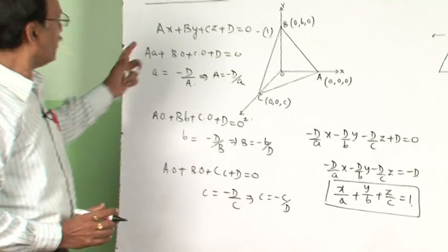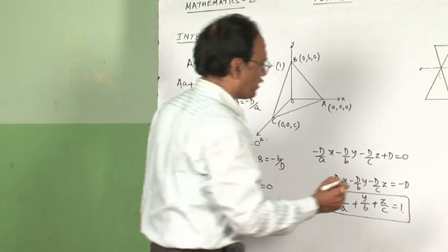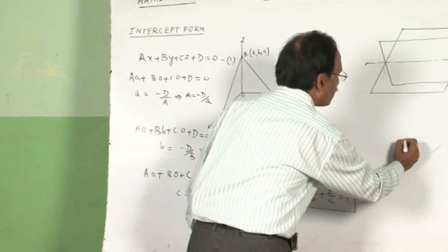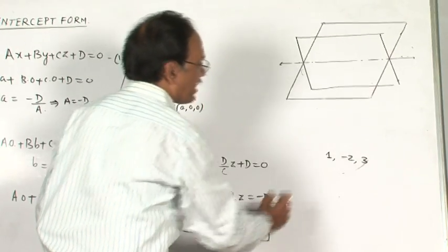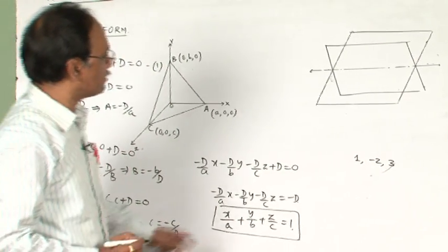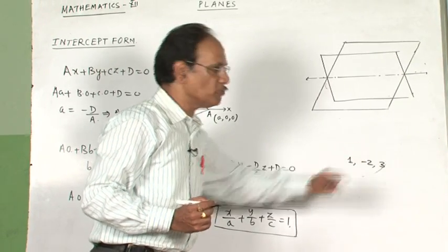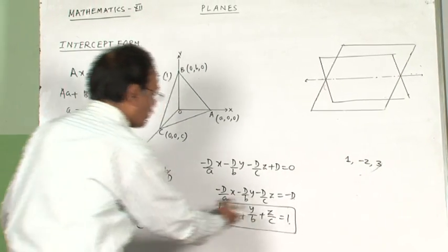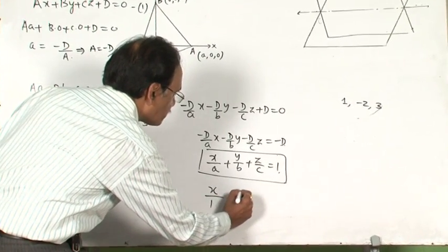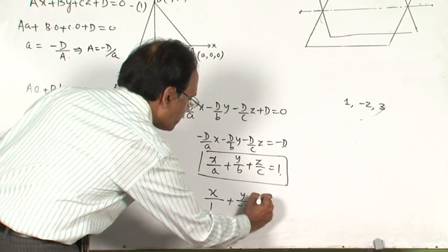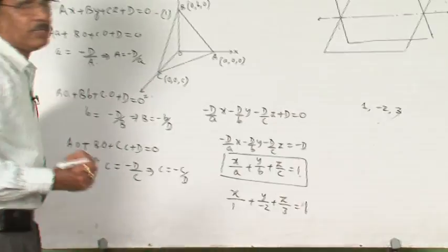If the intercepts are given, let us take one question: find the equation of a plane which cuts intercepts 1, -2 and 3 on the coordinate axes — 1 unit on x-axis, -2 units on y-axis and 3 units on z-axis. Straight away we can apply the formula. The equation will be x/1 + y/(-2) + z/3 = 1. This is the equation of the plane.